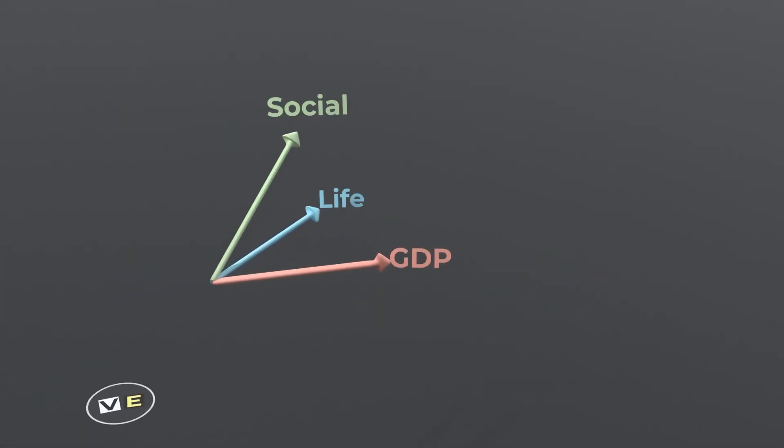PCA is all about taking all factors, combining them in a smart way, and producing new factors that are one, uncorrelated with each other, and two, are ranked from most important to least important.